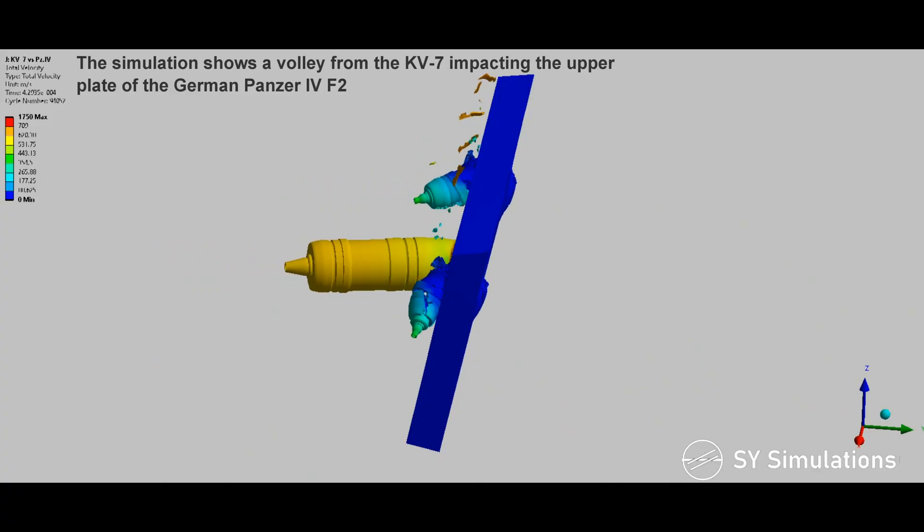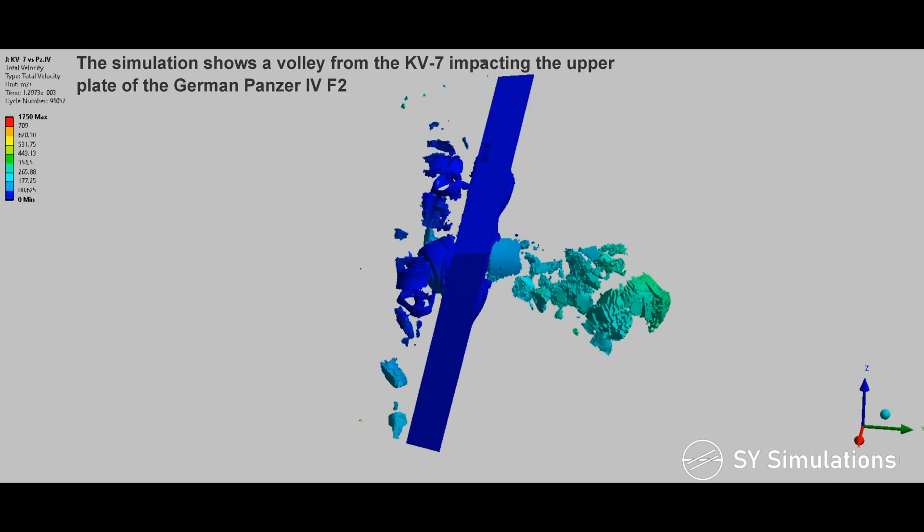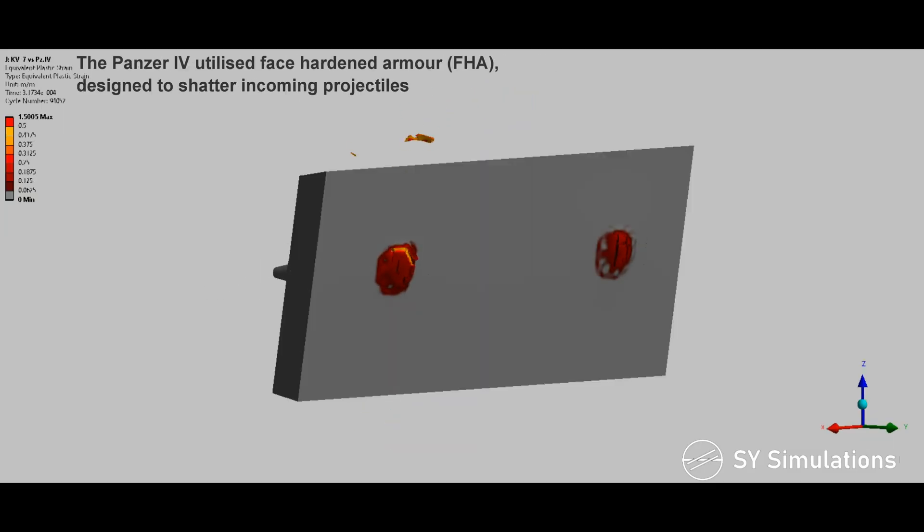The simulation shows a volley from the KV-7 impacting the upper plate of the German Panzer IV F2. The Panzer IV utilized face-hardened armor designed to shatter incoming projectiles.